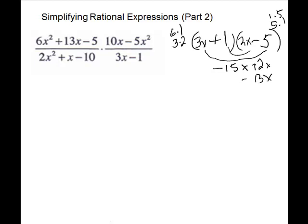Notice, I wanted plus 13x. Remember, the way to fix those is just switch the signs. So I should have had a minus there and a plus here. And then it would work. So I have 3x minus 1 and 2x plus 5.